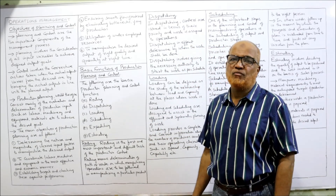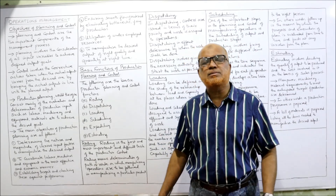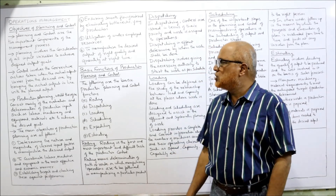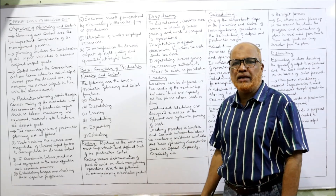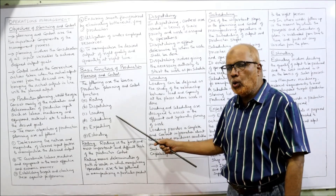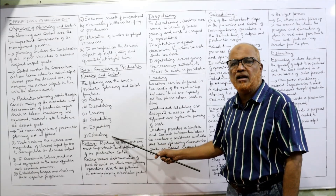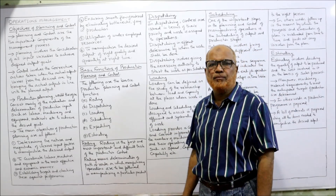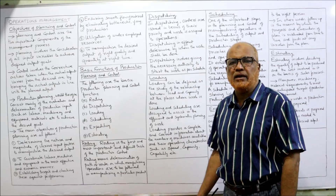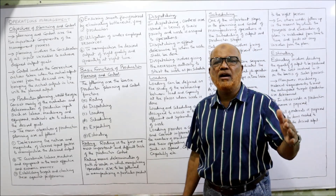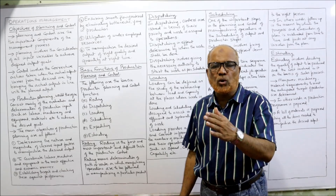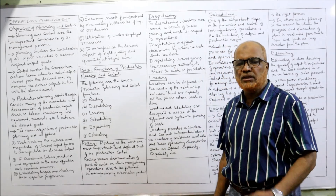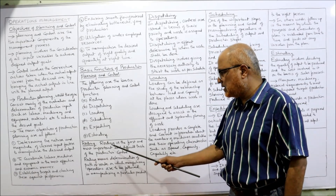Now the basic functions of production planning and control. In examinations, a question may be asked: explain what are the functions of production planning and control. The six functions are: routing, dispatching, loading, scheduling, expediting, and estimating. The first function is routing — finding out the path or route through which all resources will be used in order to produce the desired output.